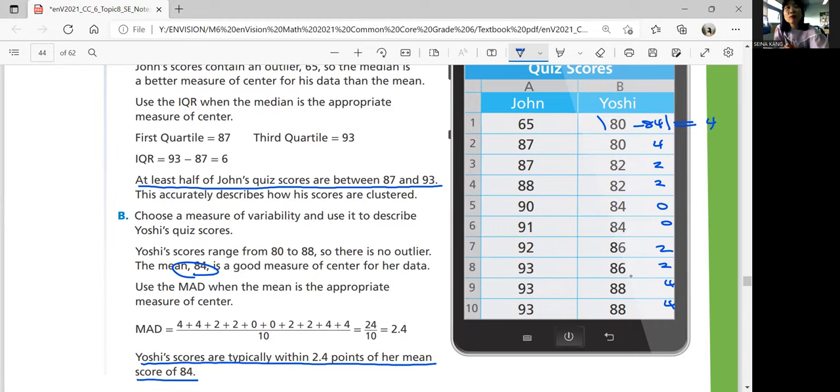So after you determine which one is the better measure, is it the mean or the median? To describe the variability, you're going to find the IQR when you're using the median. You're going to use the MAD when you're using the mean. And then after you figure out IQR and MAD, you should be able to say that in words and interpret and explain. So when you figure out IQR, you're going to describe at least half of the data or between what and what. And then when you figure out MAD, you're going to say, oh, they're typically within your MAD point of the mean score of your mean. That's how you describe using your IQR and MAD.